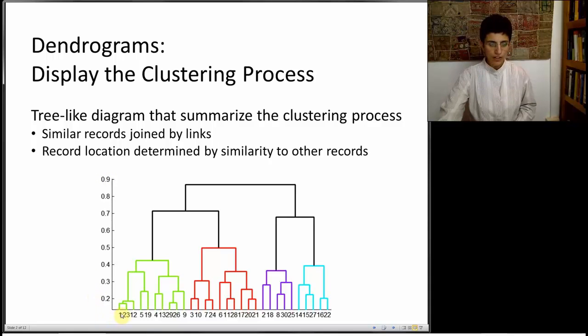Records that are similar are going to be next to each other, and records that are far away from each other are going to be on different sides of the x-axis. You can see that there are heights here. For instance, we see that one of the earliest clusters that was formed was between record 1 and 2, or 23. And the height tells us what was the distance between them. So the lower, the more close these records are.